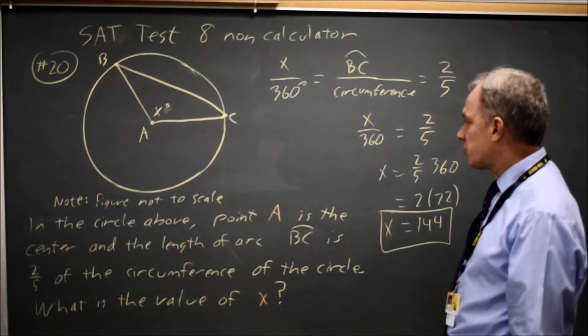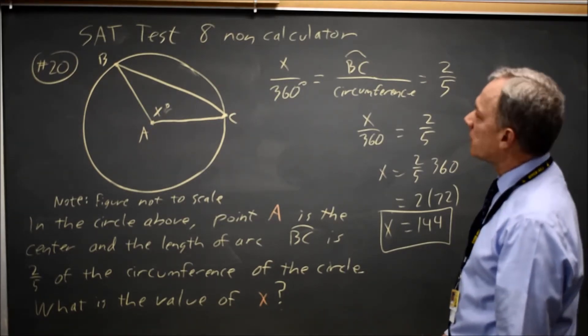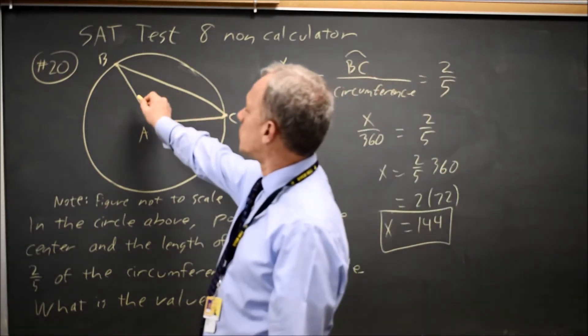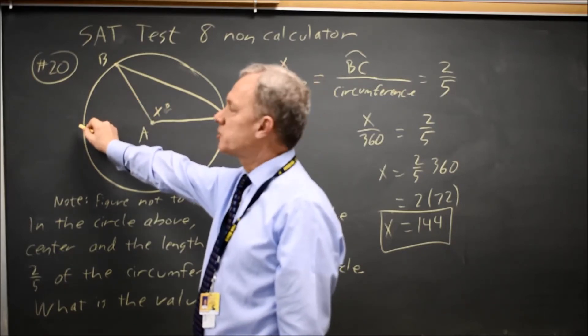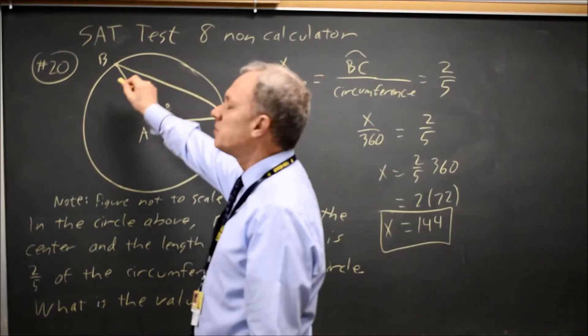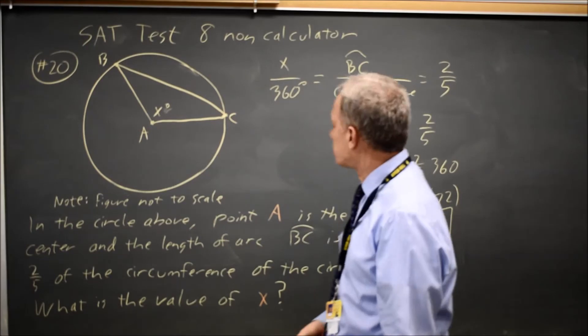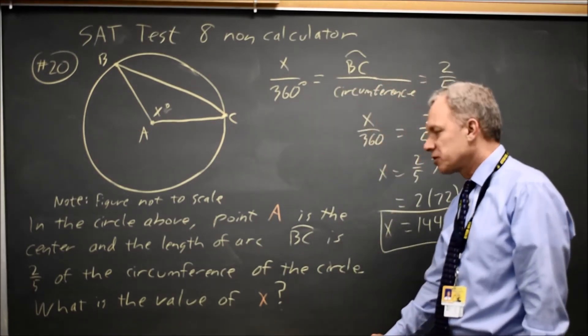And they are asking for the value of x. And it's plausible that if this is 144 less than a straight angle, 180, we would have about 2 fifths of the circumference. So that's a reasonable answer for this question.